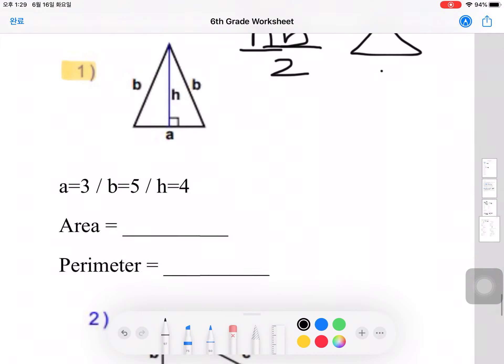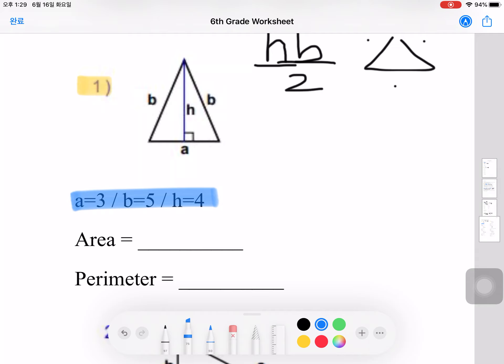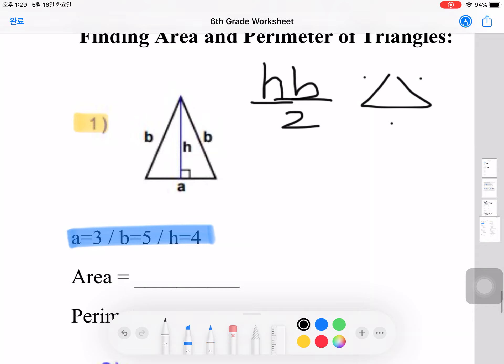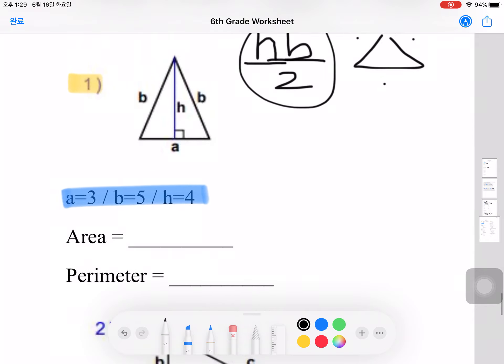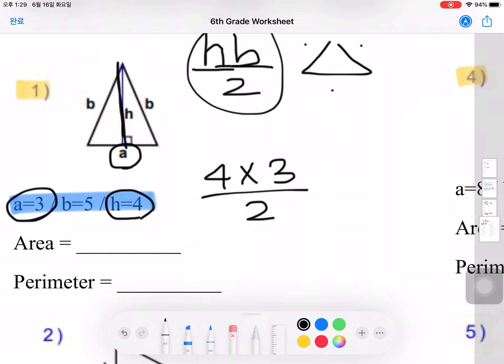So let's try number 1. Here are the measurements given for the triangle above. To find the area, we have to use this formula. So let's do the height, which is 4, times the base, which is A in this question. And A is 3, so 4 times 3 divided by 2. So 4 times 3 is 12 divided by 2. And if you simplify that, it comes out to 6. So your answer for area would be 6.